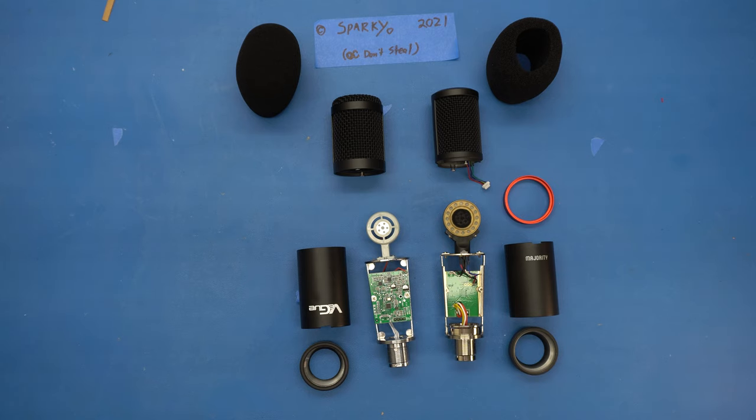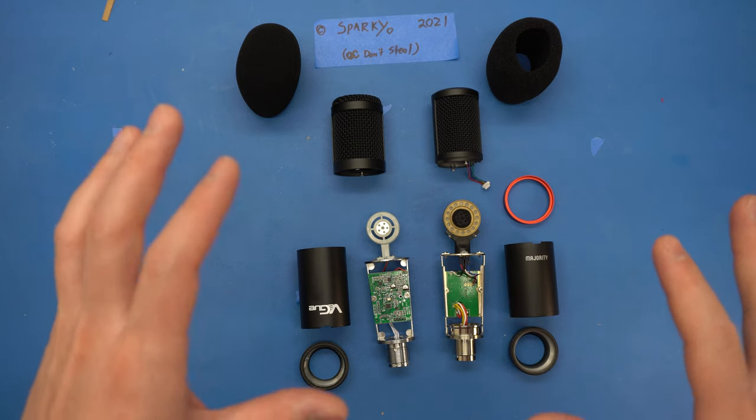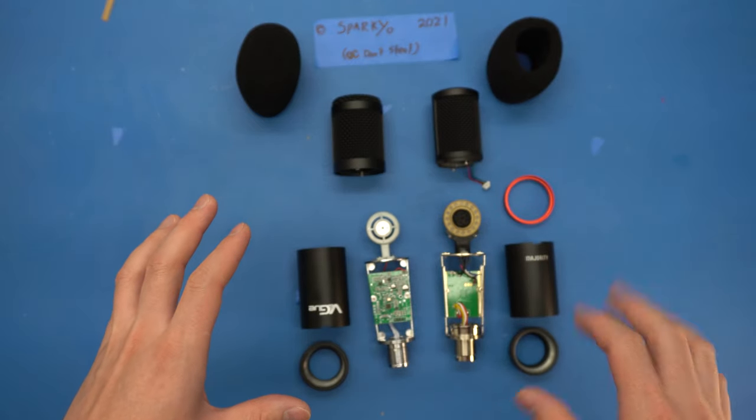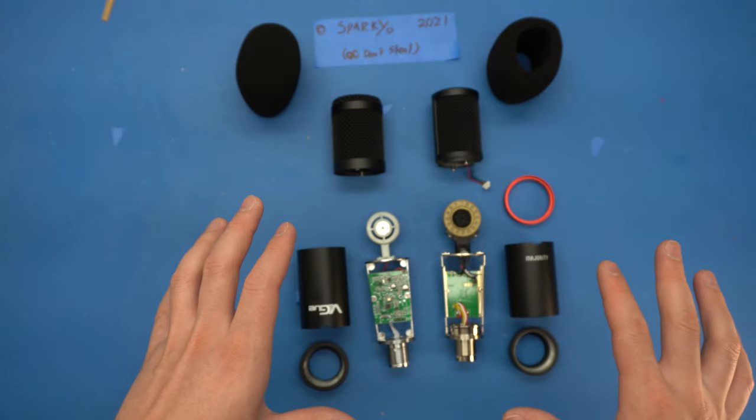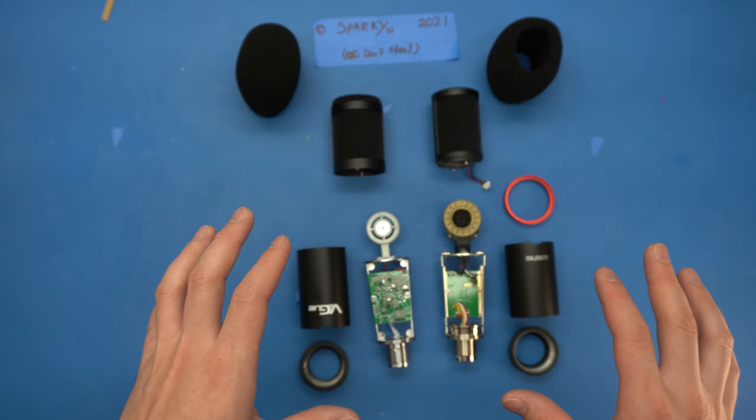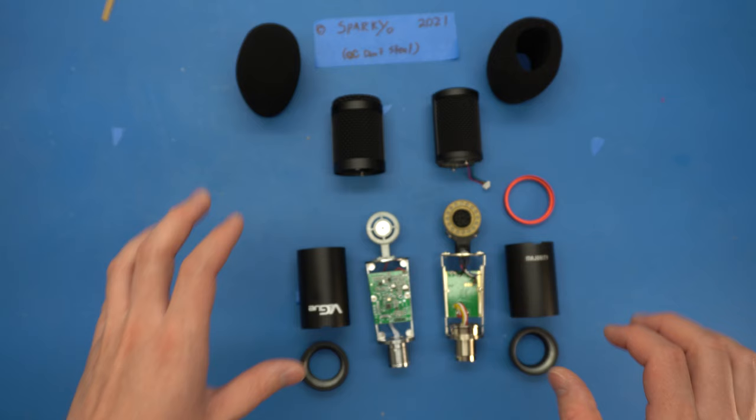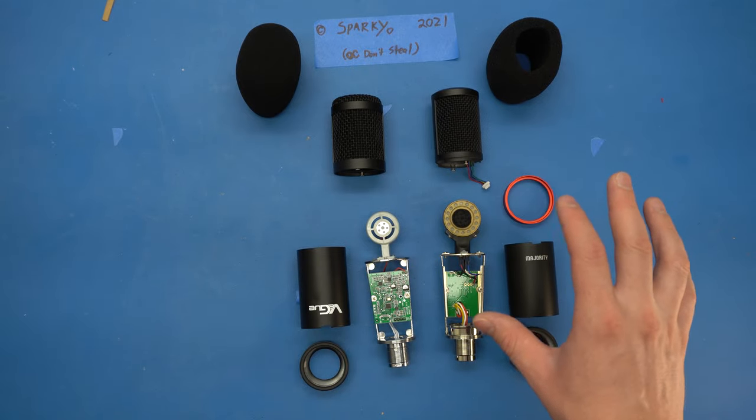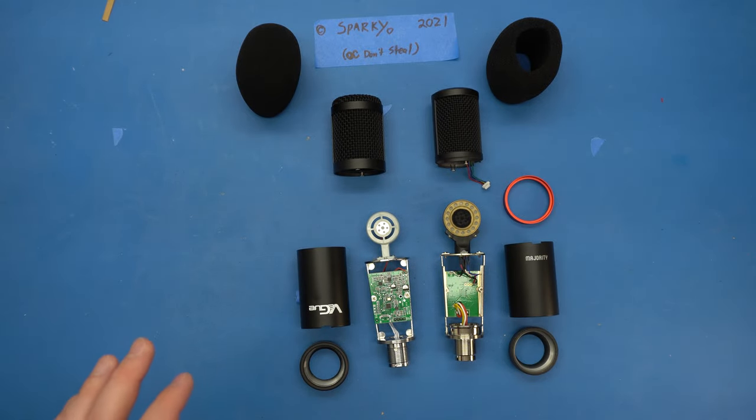So I'm shooting this before finishing my review of the Vegway VG-16. I couldn't help myself. I wanted to do a teardown and get a real opinion. So this is just going to be a side-by-side teardown of two very similar USB microphones in the same class of microphone, with the Vegway VG-16 on the left and the Majority RS Pro on the right. This is to explain why I really like one of these, and the other one, not so much.